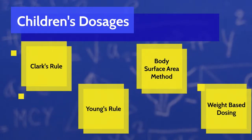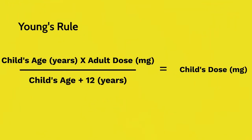Next, we will discuss Young's Rule. Young's Rule is the child's age in years times the adult dose in milligrams divided by the child's age plus 12 years. Since years appear in both the numerator and denominator, they cancel out, leaving only milligrams as the final units. This is similar to a proportion: the child's age over the child's age plus 12, or an adult age, times the typical adult dose equals the child's dose.